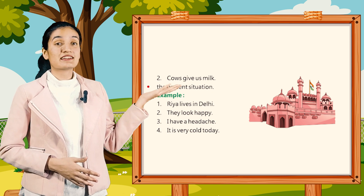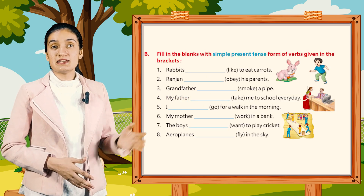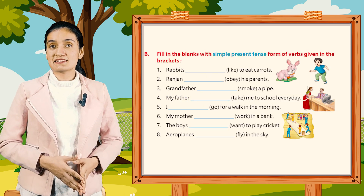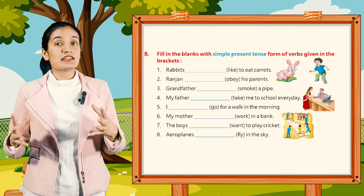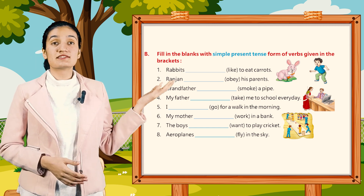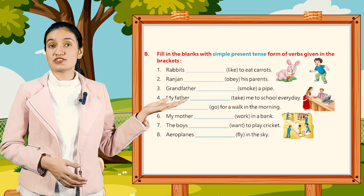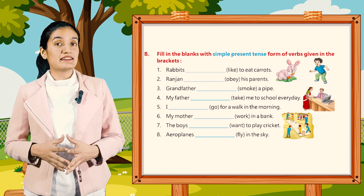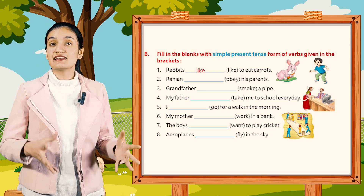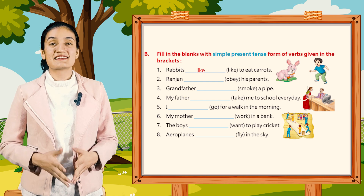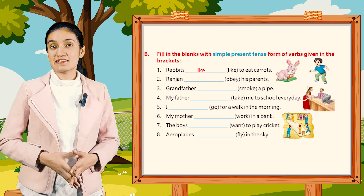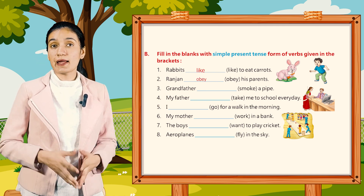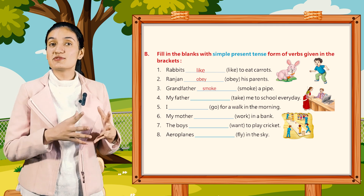Now let's begin with Part B — filling the blanks with the simple present tense form of verbs given in the brackets. First, rabbits dash — to eat carrot — it will be: eat. Second, Ranjan dash his parents — it will be: obeys. Third, grandfather dash a pipe — it will be: smokes.